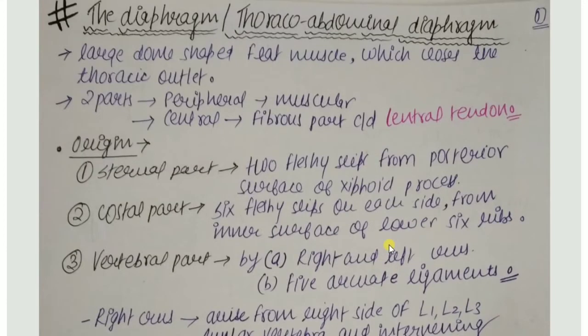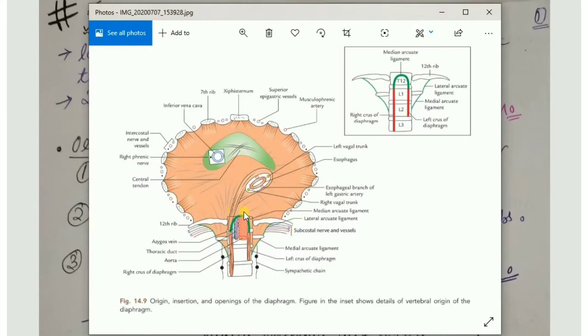Welcome to this video. Today we are going to study about the diaphragm, also called the thoracoabdominal diaphragm. This is the diaphragm which separates the thoracic cavity from the abdominal cavity. This dome-shaped structure is present between our thorax and abdominal cavity.